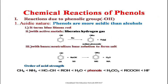Now coming on to the chemical reactions of phenols. Phenols have an aryl ring as well as an OH group, and their reactions are due to both the benzene ring and the OH group. First we will discuss reactions due to the phenolic OH group. The first one is the acidic nature. Phenols are more acidic than alcohols, and their acidic nature can be checked by various reactions.